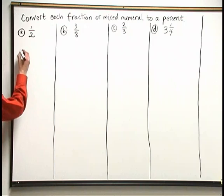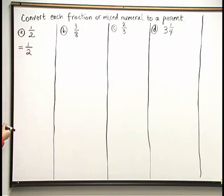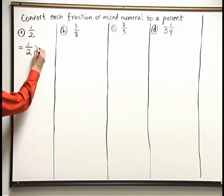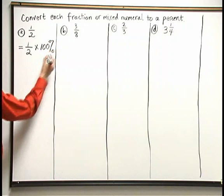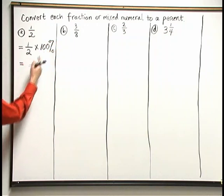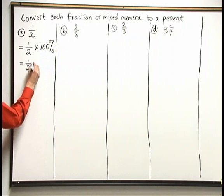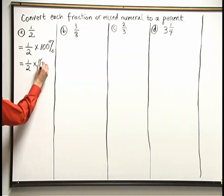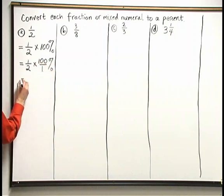Now 1 half I can convert to percent form by taking that 1 half and multiplying by 100 and add on the percent sign. Because I'm multiplying a fraction times a whole number, I can write this as 1 half times 100 over 1 percent. Now before I go ahead and multiply, I'd like to do some canceling.